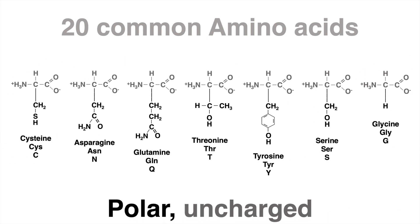But there are also uncharged polar amino acids. Those amino acids are hydrophilic — they can form hydrogen bonds with water and are more soluble than non-polar amino acids. Those uncharged hydrophilic amino acids include cysteine, which is responsible for disulfide bridges, asparagine, glutamine, threonine, tyrosine — which is basically a polar version of phenylalanine — and then there is also serine and glycine.